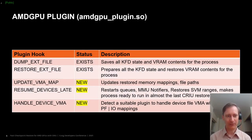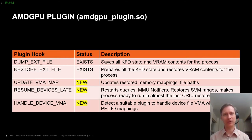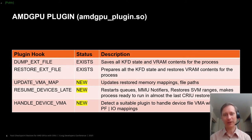The plugin provides five plugin hooks. There were two existing hooks: dump_ext_file and restore_ext_file — where ext file stands for external file — that already existed in CRIU for dealing with files not natively supported by CRIU, and can be used for dealing with device files. The dump_ext_file hook saves all the KFD state and all the VRAM contents. The restore_ext_file hook takes all that state from the images and sends it back to the KFD kernel mode driver and restores the VRAM contents.